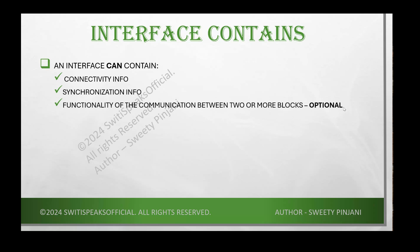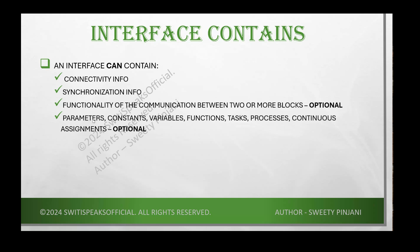Optionally, an interface can contain parameters, constants, variables, functions, tasks, processes, or continuous assignments. So to summarize, your interface can contain: connectivity information, synchronization information, communication between two or more blocks, and optionally parameters, constants, variables, functions, tasks, processes, and continuous assignments.